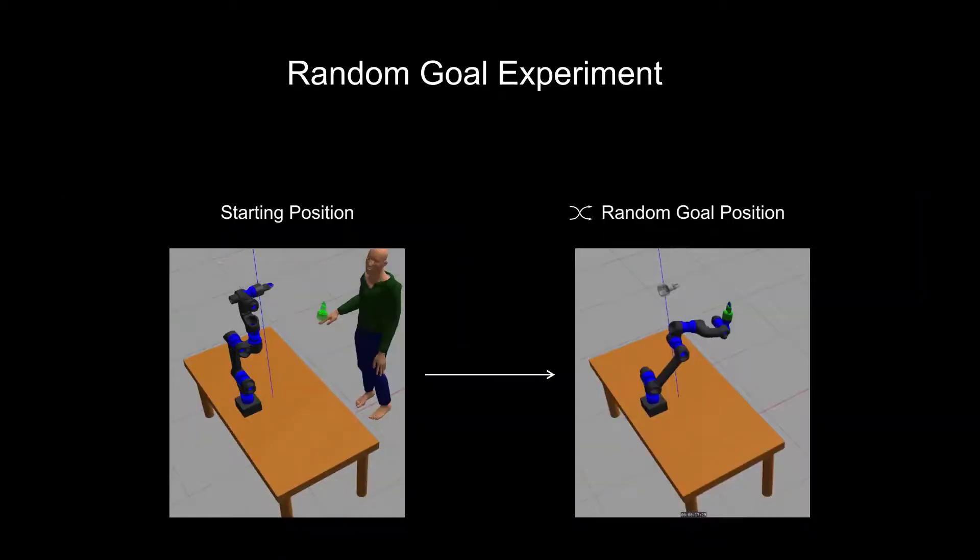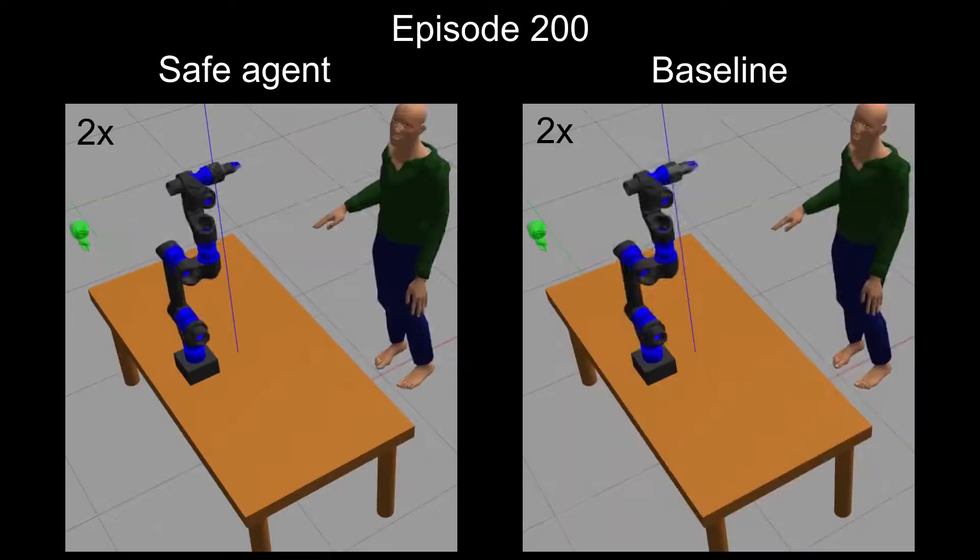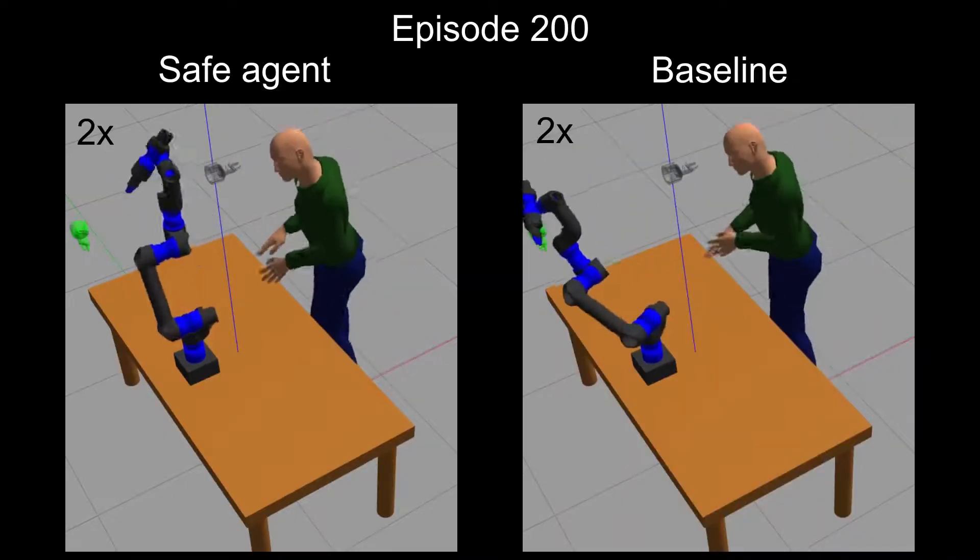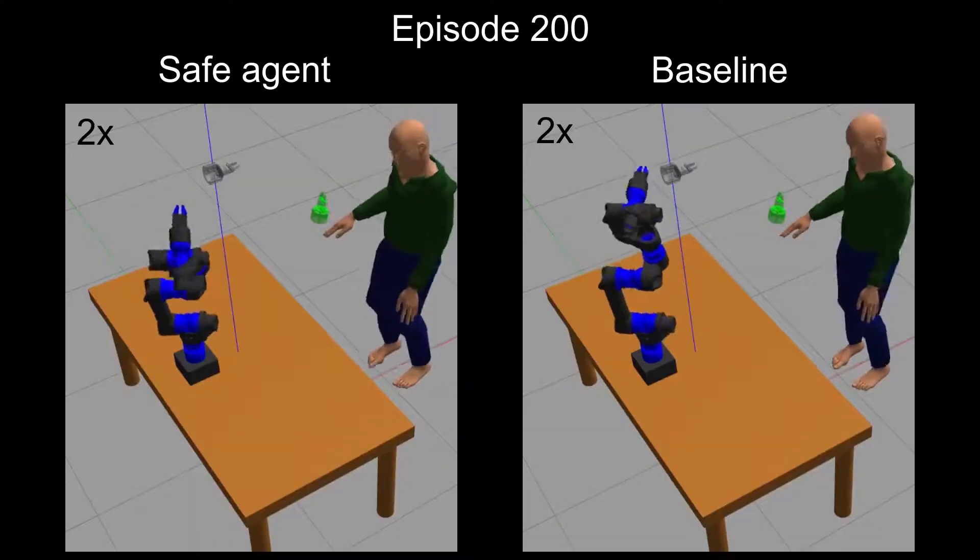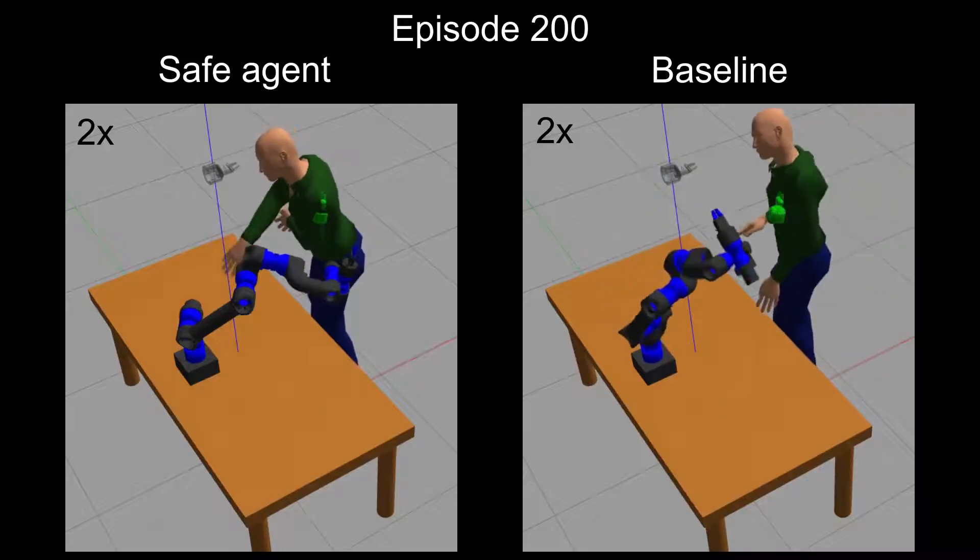We first want to highlight the difference in performance when training with and without our safety shield. In our first experiments, we trained the robot to reach randomized goals. Both agents showed a similar success rate for reaching the goal. However, only our safe agent brings the robot to a safe state before any collision with the human could occur.